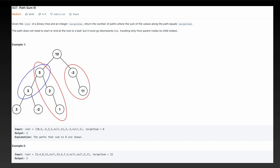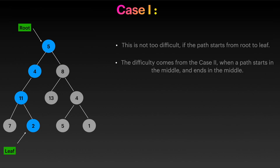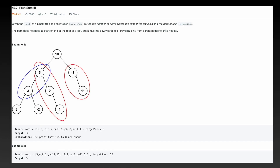This problem is similar to the previous one we have seen — Path Sum 2, the second iteration in the path sum series — where you have to find how many paths starting from the root node all the way to the leaf node sum to a given target sum.